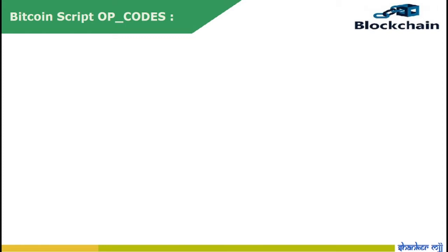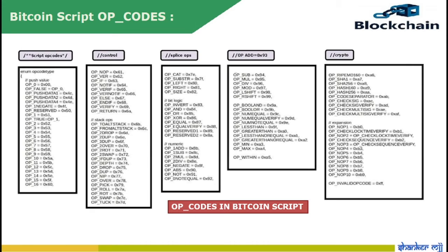Bitcoin script opcodes contain all the opcodes used in the scripting language. In this picture it shows opcodes used in Bitcoin script: control opcodes such as OP_IF, OP_NOTIF, OP_VERIFY; splice opcodes such as OP_LEFT, OP_RIGHT, OP_SIZE; numerical opcodes such as OP_ADD, OP_SUB, OP_MUL; and crypto opcodes such as OP_SHA1, OP_SHA256, OP_HASH160, OP_CHECKSIG, OP_CHECKSIGVERIFY, and OP_CHECKMULTISIG.